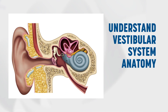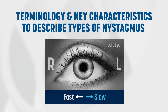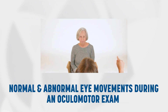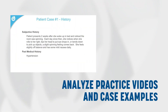Understand basic vestibular system anatomy. Examine the main relationship between the eyes, inner ear, and the brain. Understand terminology and key characteristics used to describe types of nystagmus. Identify normal and abnormal eye movements during an ocular motor exam. Recognize eye movements associated with vestibular pathology. And analyze practice videos and case examples of eye movements and associated diagnoses.